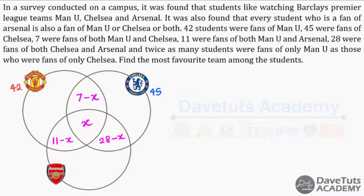There's one important piece of information: every student who is a fan of Arsenal is also a fan of Man U or Chelsea or both. This means students who are only fans of Arsenal do not exist — Arsenal alone is zero. Additionally, twice as many students are fans of only Man U as those who are fans of only Chelsea.